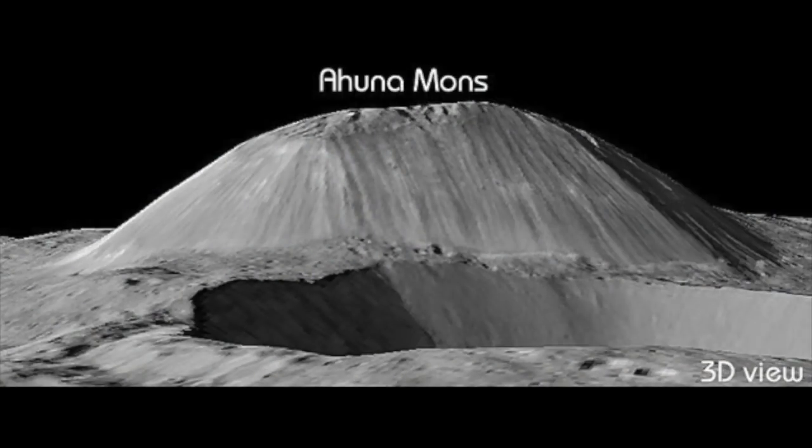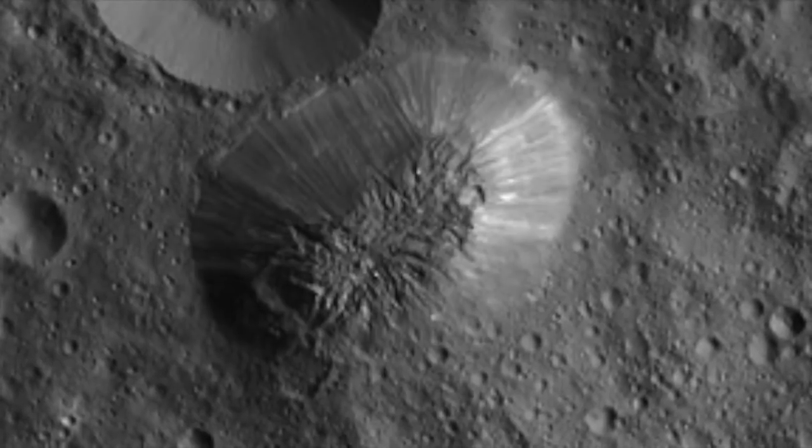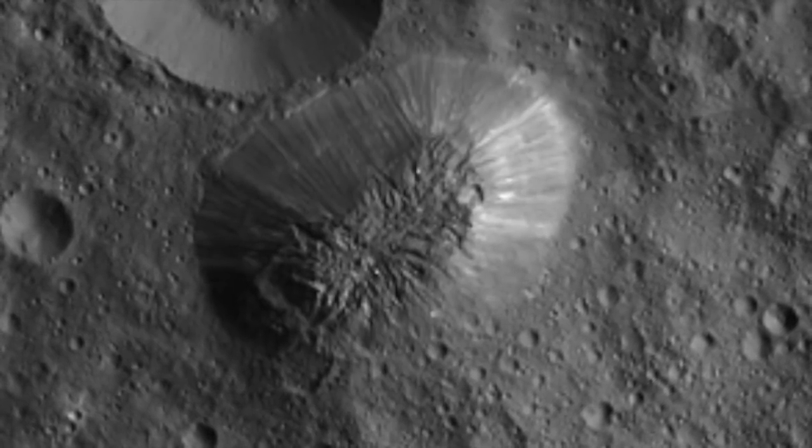A cryovolcano is, as you can imagine, a volcano, but with a twist. Instead of releasing molten rock or lava, like the volcanoes we have on Earth, a cryovolcano erupts water, methane, or ammonia. The water and other gases released often turn into a solid form once exposed to the low temperature surrounding the volcano. Hence the more colloquial name, ice volcanoes.